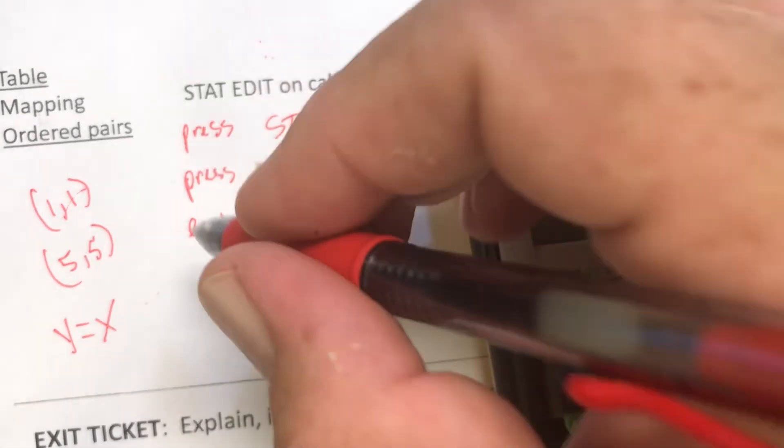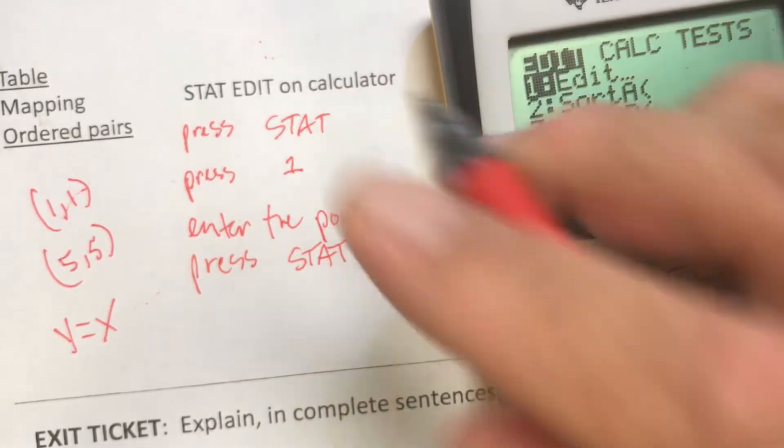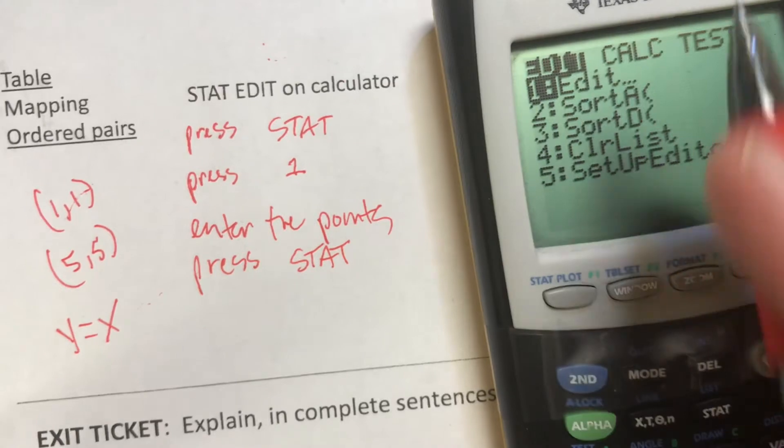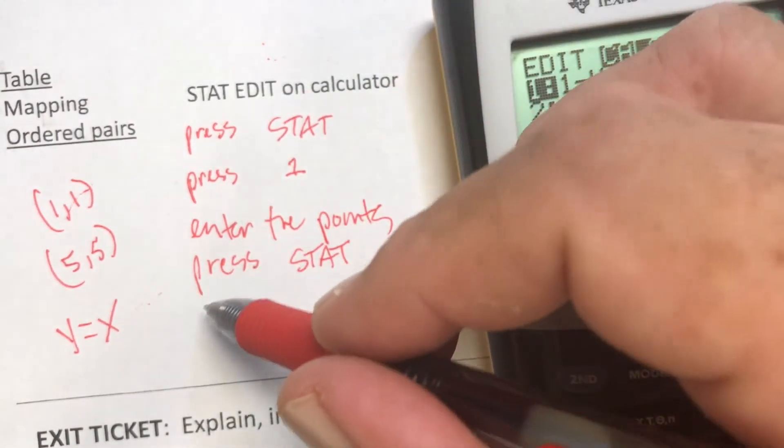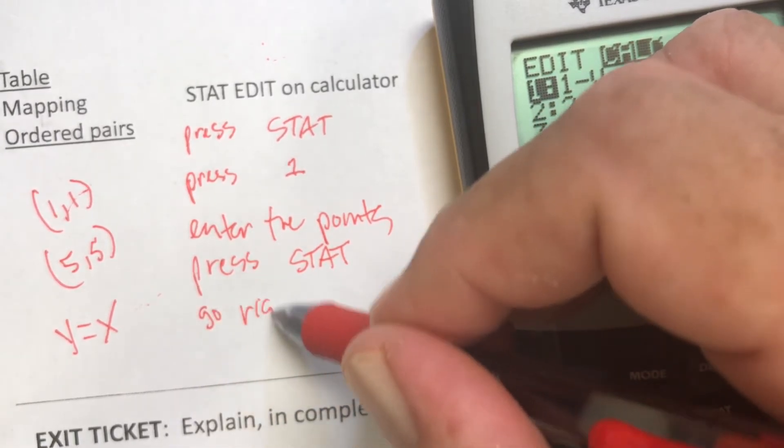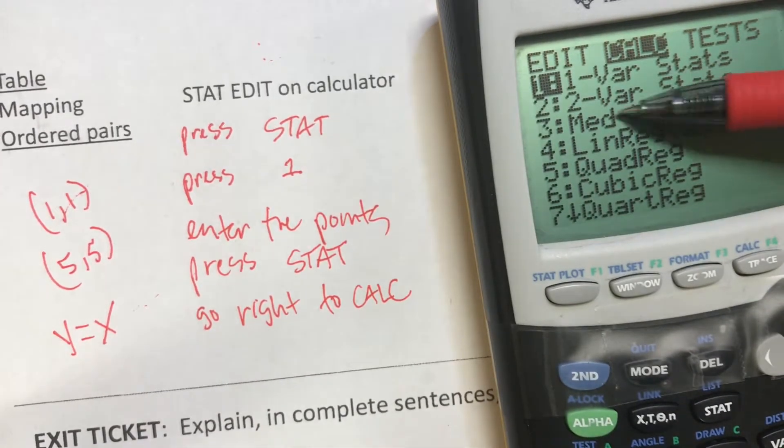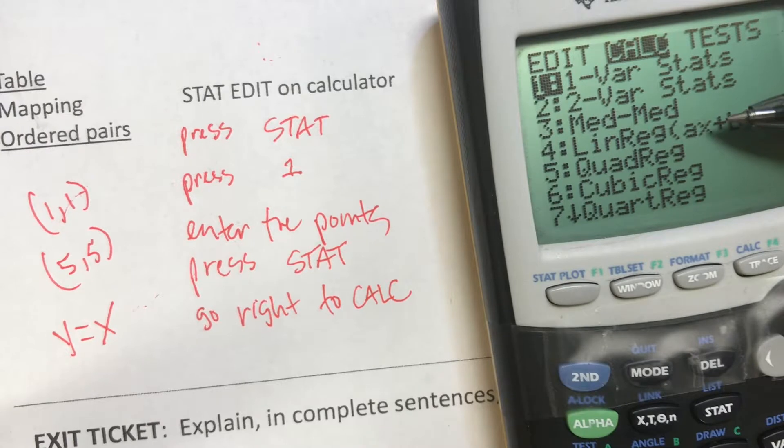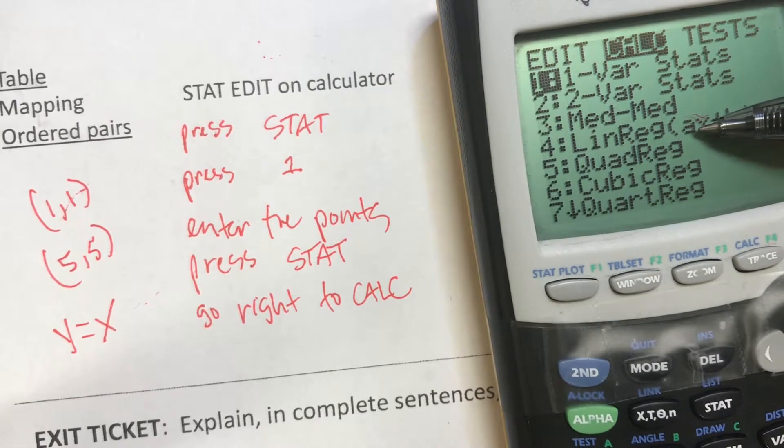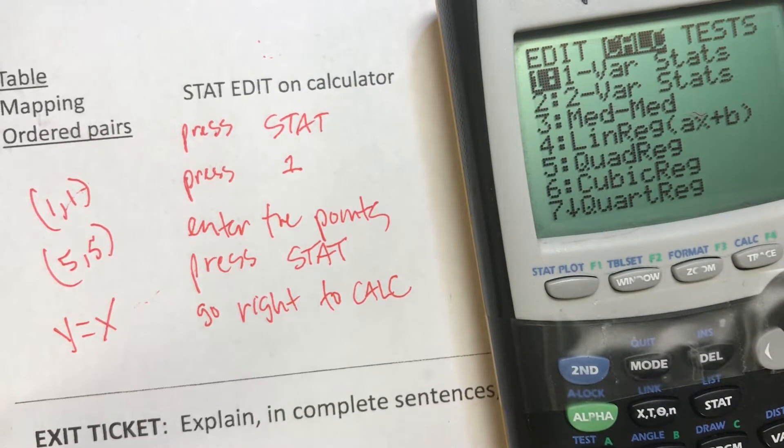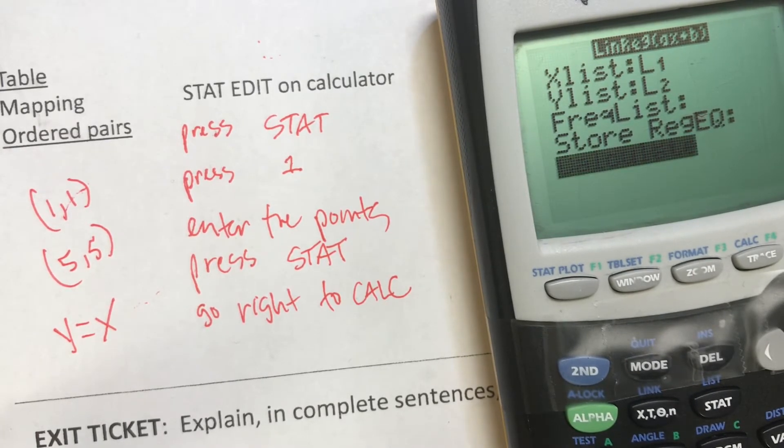I press that, then I'm going to push right over to CALC where it says CALC on the top, over to the right, and hit CALC. Go right to CALC. Then I'm going to select number 4 for linear regression, which is going to put my equation in mx+b. But in the calculator they use an a instead of an m for slope - same thing though. Number 4. It's going to give me this list. I'm just going to hit ENTER a few times so I get to CALCULATE.